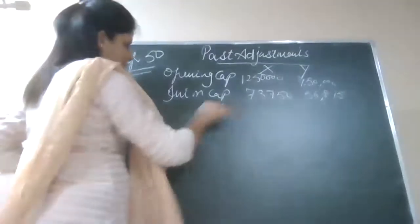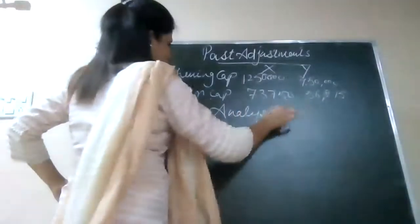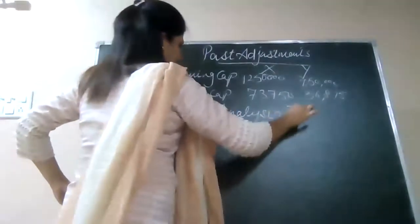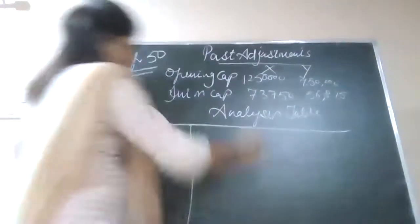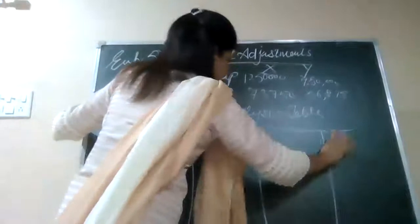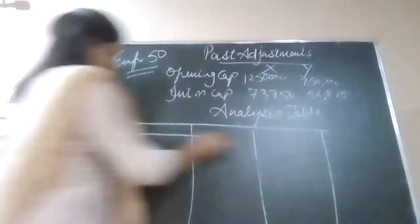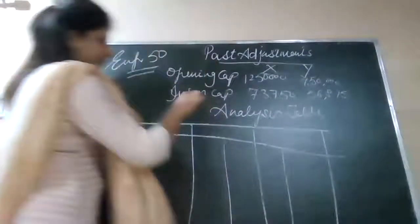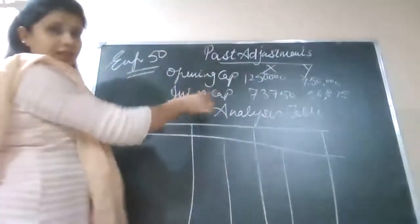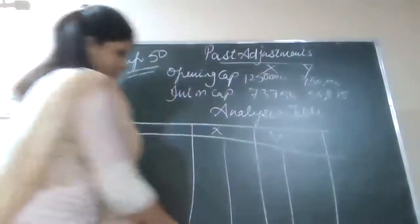Let's see the analysis table. This is for particulars, this is for X and that is for Y. So what we do, this is for X, this is for Y, right?